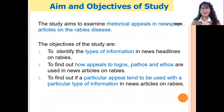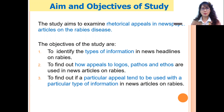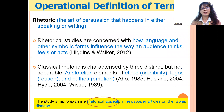The aim of my study is to examine rhetorical appeals in newspaper articles on the rabies disease. The objectives are to look at the types of information in the news headlines of rabies, also appeals to logos, pathos, and ethos, and finally to see whether a particular appeal tends to be used with a particular type of information. Let me give you some operational definitions of terms.